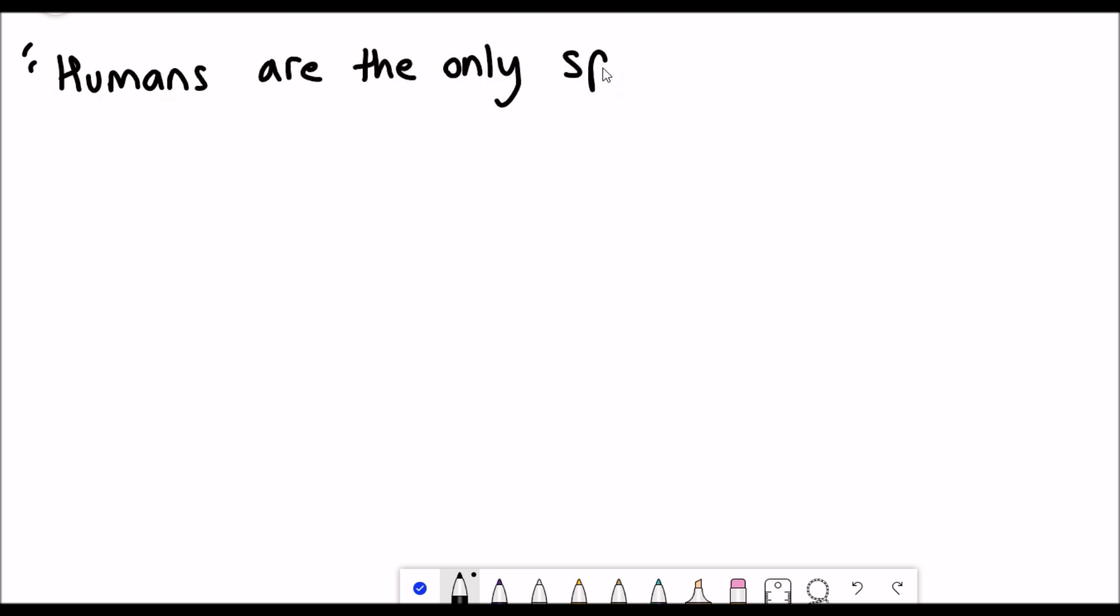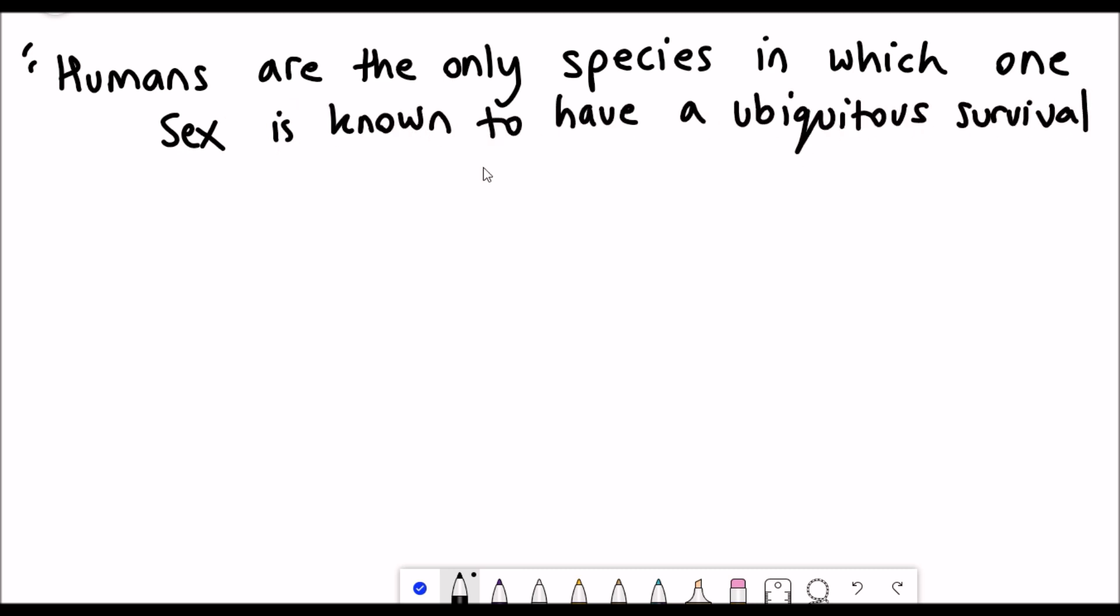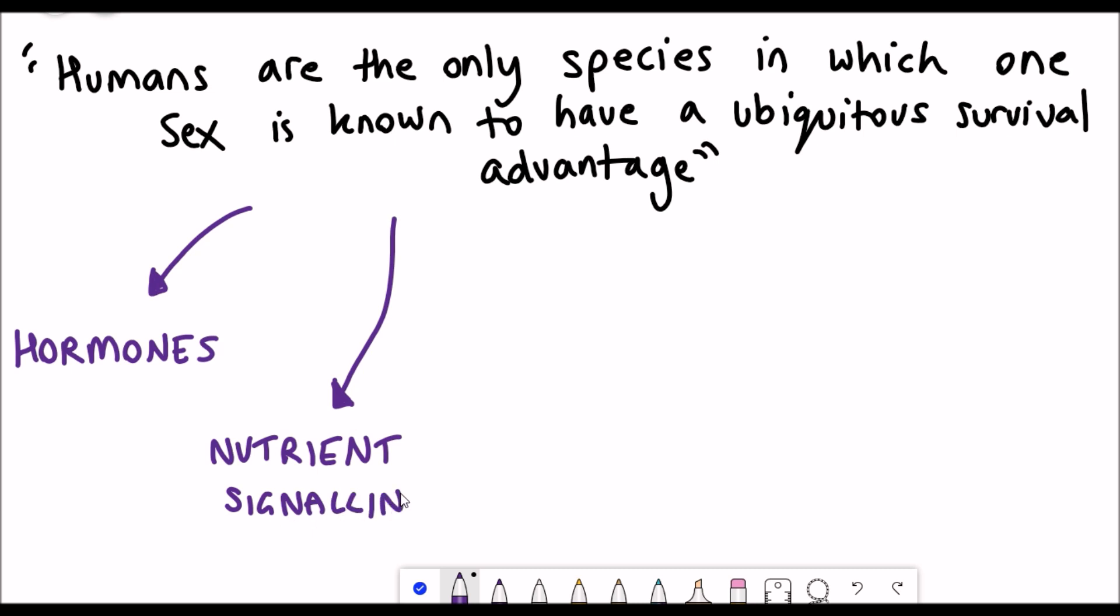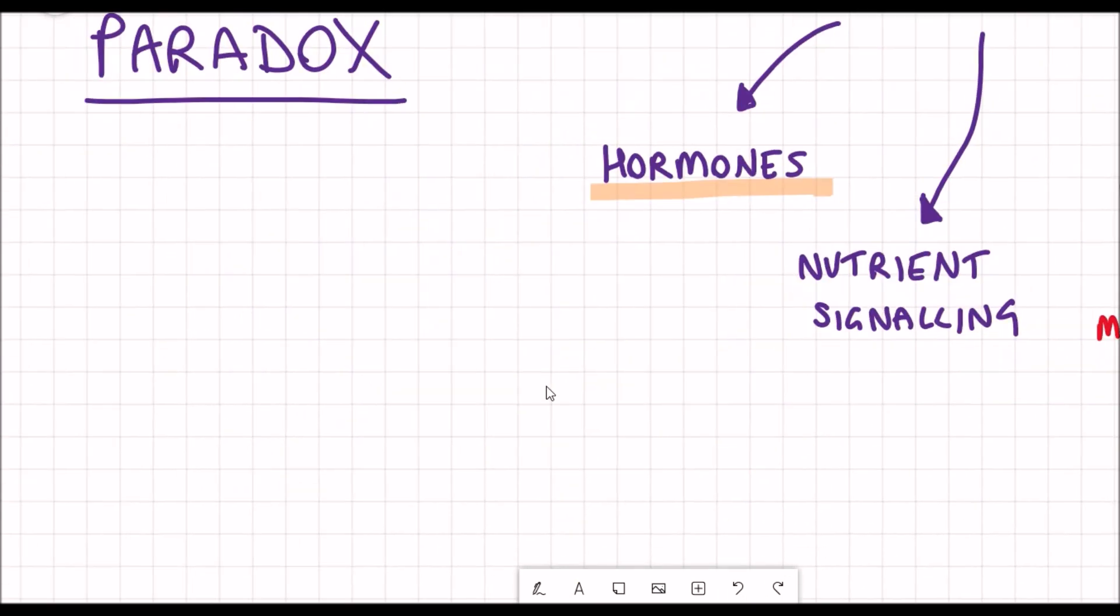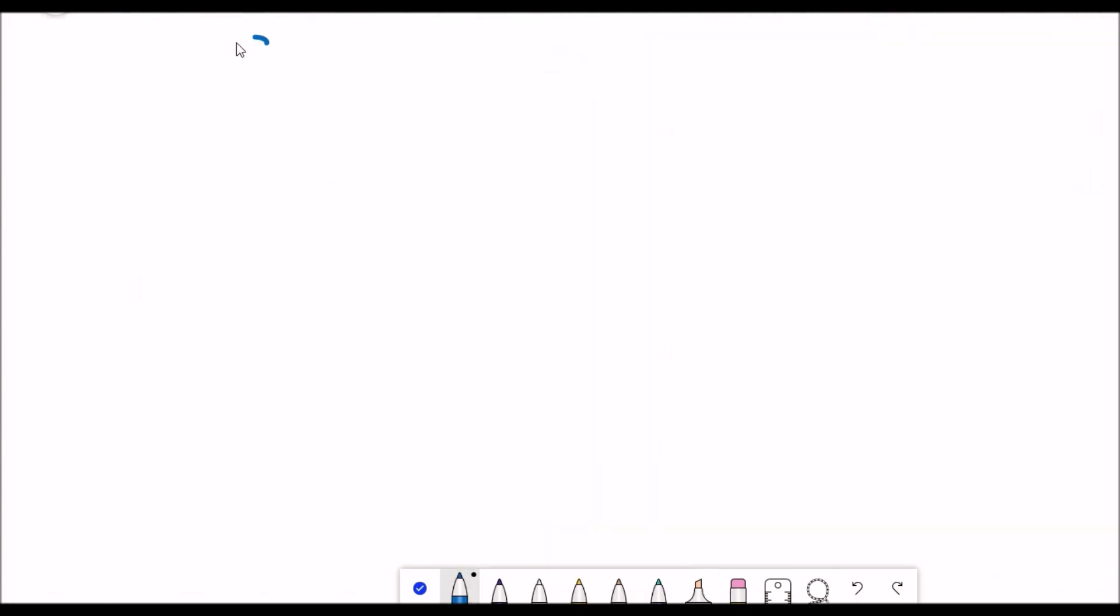Anyway, let's move on and start to discuss some of the potential reasons why women live longer than men. So one of the quotes I found in the review was, humans are the only species in which one sex is known to have a ubiquitous survival advantage. Well, regardless of whether the statement is actually true, the data I've shown you so far has shown that generally there is a pattern for females to live longer. So why? I've broken that down into different reasons: one is to do with the hormones, one is to do with nutrient signaling differences, and then there's the asymmetric inheritance arguments that are to do with both the sex chromosomes and the mitochondria, and also a link to the gut microbiome.